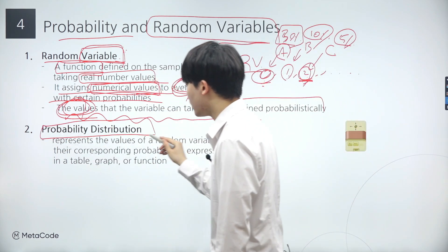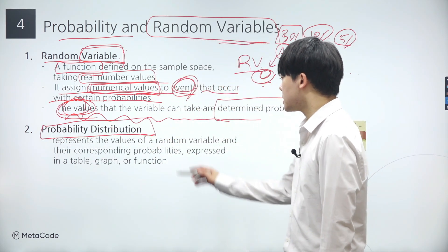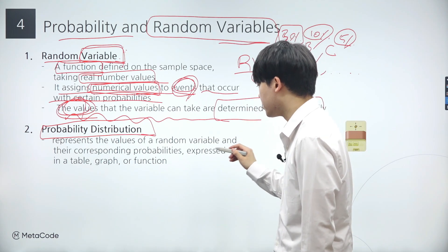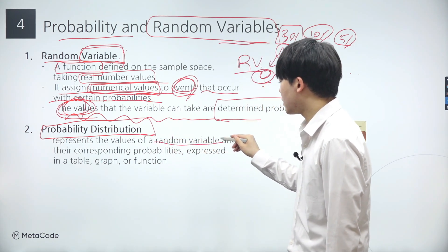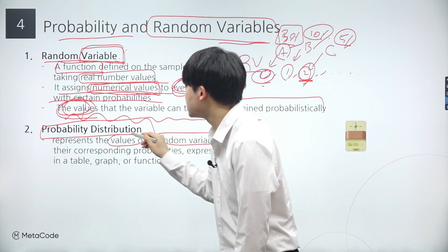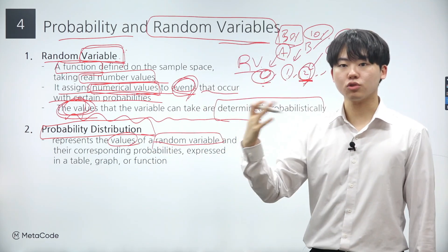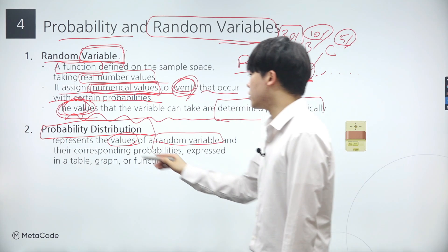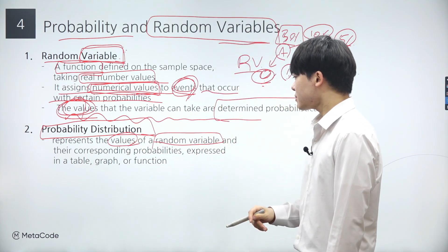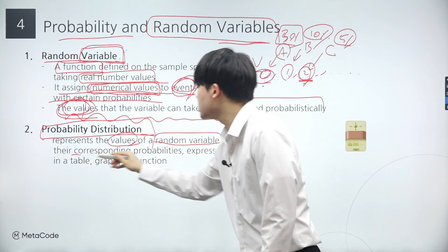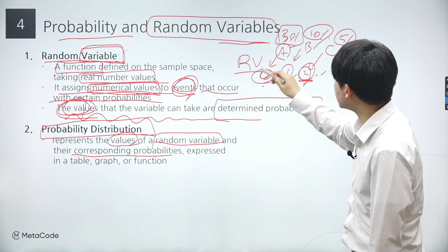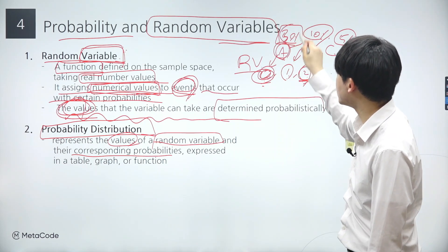Now let's consider the definition of a probability distribution. Earlier, I mentioned that a random variable might return values such as 0, 1, and 2. While these are integers, a random variable can indeed return any value within the real numbers. I also mentioned that each value returned has a corresponding probability. For instance, in the previous example, the probability associated with the value 0 was 30%.